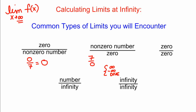If you encounter 0 over 0 as the form of your answer, just like in the last section, this is going to mean do more algebra, because this is an indeterminate form — something we cannot tell just by looking at the form what the answer should be.